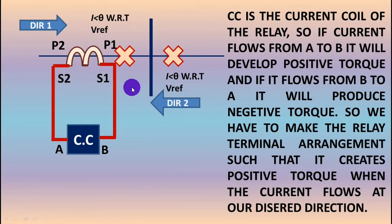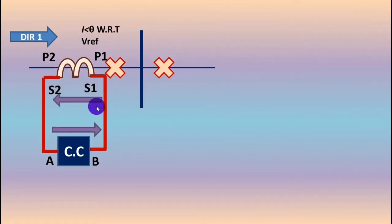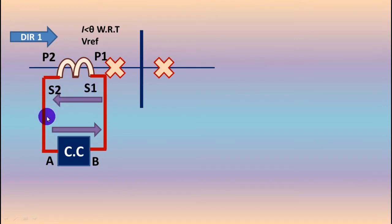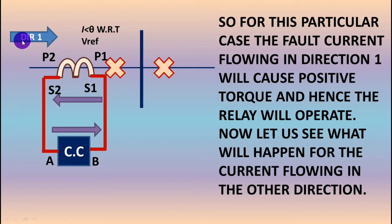This relay will create positive torque when the current flows from A to B through the current coil, and will create negative torque if the current flows from B to A. We have to ensure that for our desired direction the current creates positive torque in this current coil. Our desired operating direction is direction 2 — the relay should operate for direction 2, not direction 1. Let's see whether this connection satisfies that. For direction 1, the current is flowing from P2 to P1, so in the secondary there will be current from S1 to S2, flowing from A to B — generating positive torque.